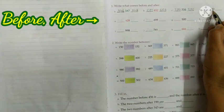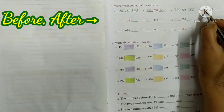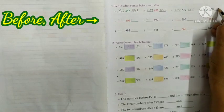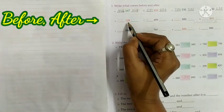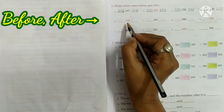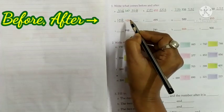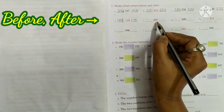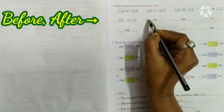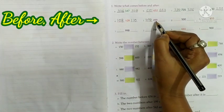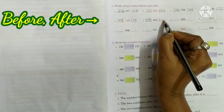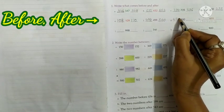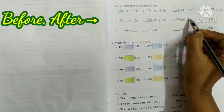Next, 230: before 230 is 229, after 230 is 231. Next, 109: before 109 is 108, after 109 is 110. Next, 499: before 499 is 498, after 499 is 500. Next, 500: before 500 is 499, after 500 is 501.